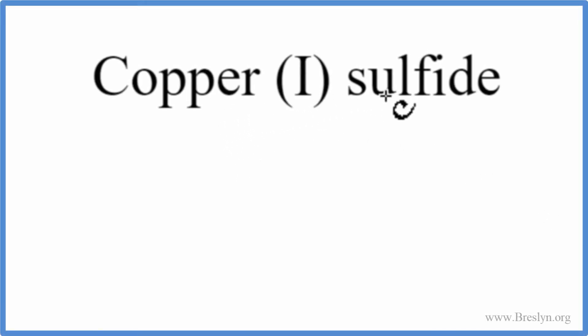To write the formula for copper 1 sulfide, we go to the periodic table and we look up copper, that's Cu, and then sulfide, we're looking for sulfur, that's S.